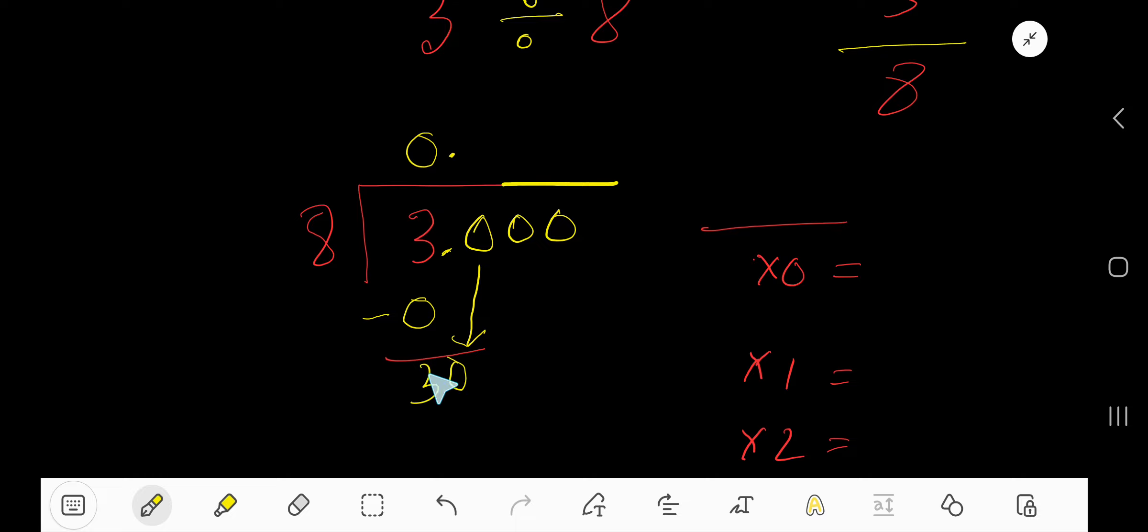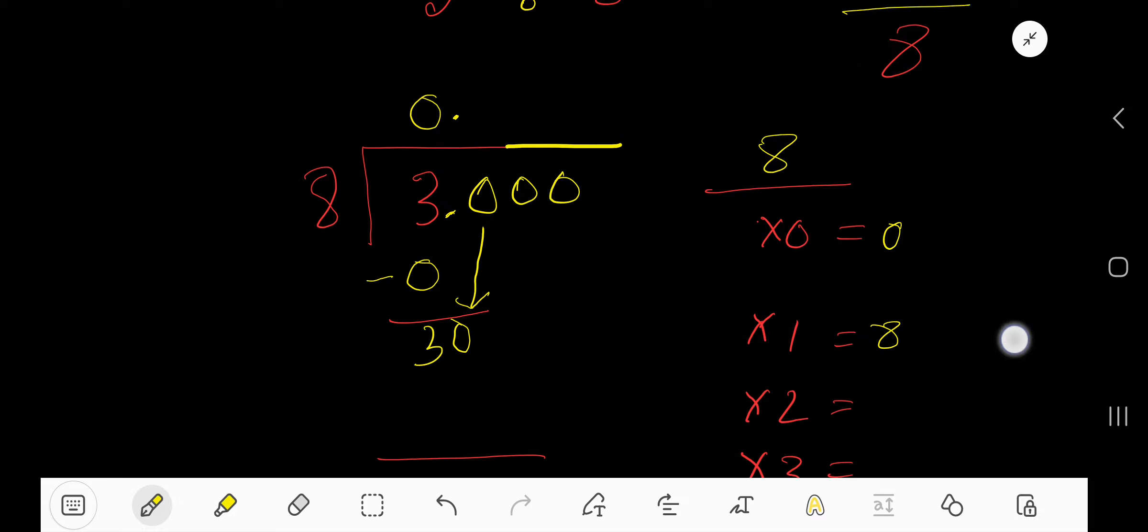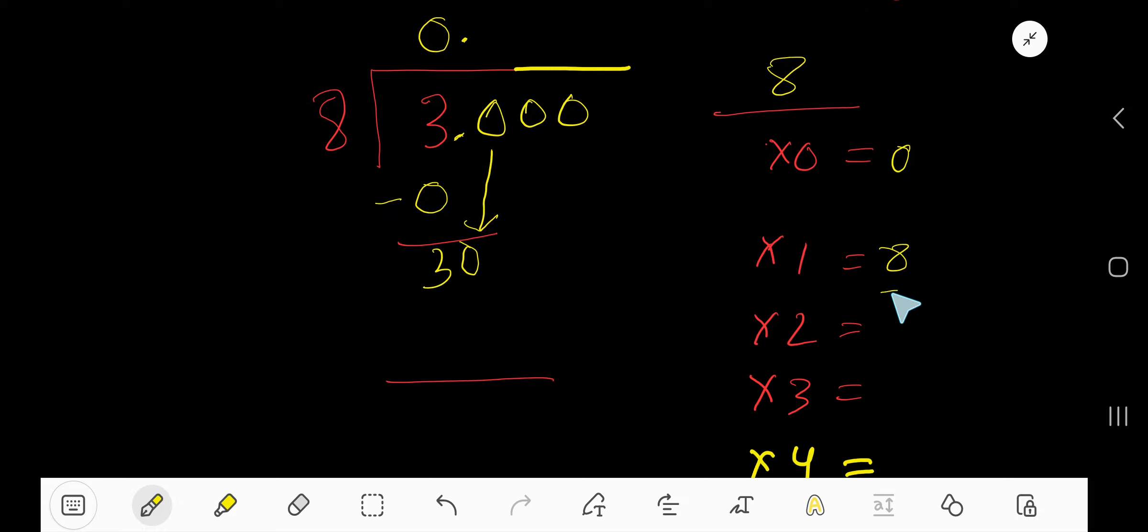Let me find the multiplication table of 8 smartly. 8 times 0 is 0. 8 times 1, just add 8 with the previous step, equals 8. 8 times 2, just add 8...